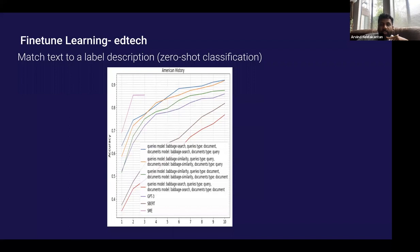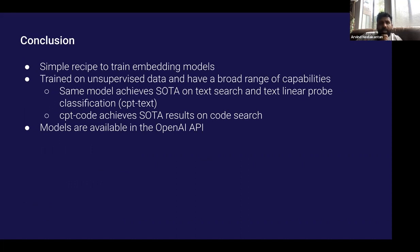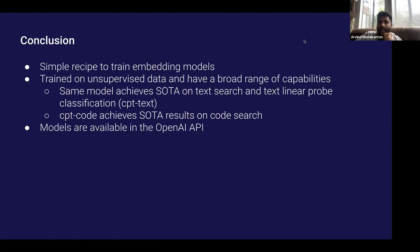To summarize: we talked about contrastive models, how they differ from generative models, how to train them, the importance of batch size, the high-level training recipe, and a comparison with previous work. We covered experiments on text classification, text search, and code search, and how these models are available in the API. To conclude: we have an extremely simple recipe to train these embedding models — they are unsupervised models with a very broad range of capabilities, trained on internet data, and the same model performs really well on a very broad set of tasks. The models are available in our API, so if you're interested you can play with them. That's all I have — thank you for listening.